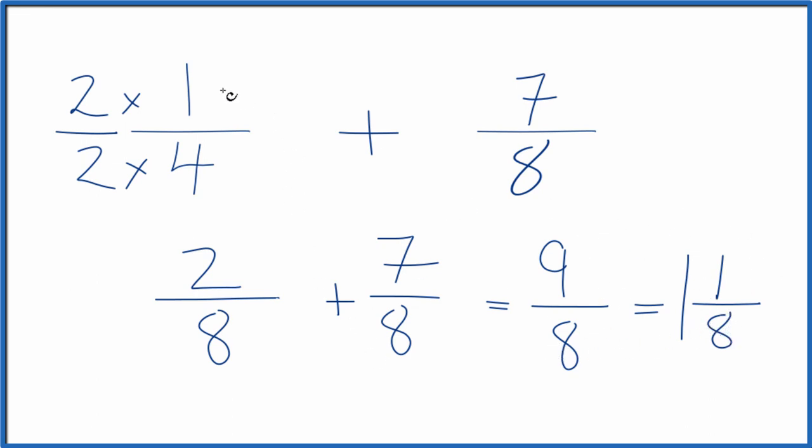So that's it. This is Dr. B adding 1 fourth plus 7 eighths. The answer, 9 eighths, or you could write a mixed fraction, 1 and 1 eighths. Thanks for watching.